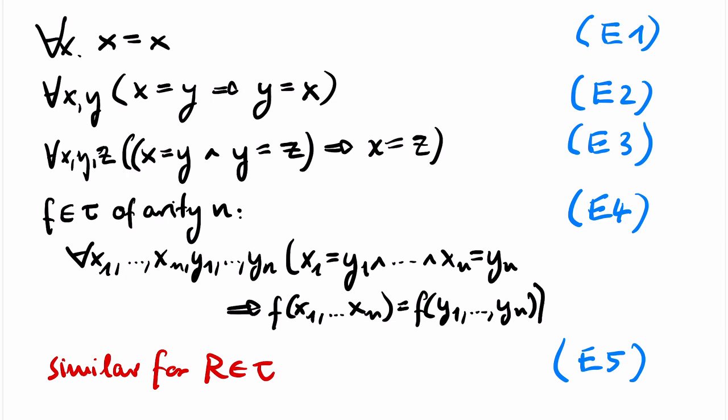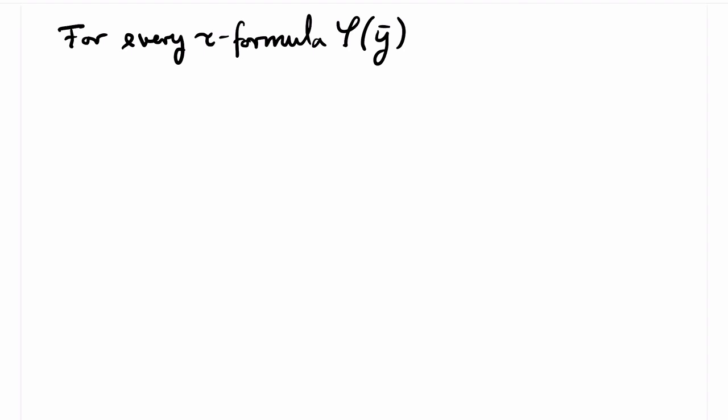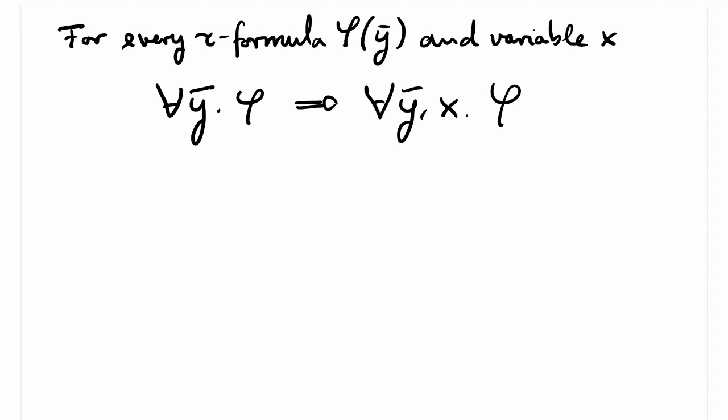It should be clear that all of these sentences hold in all τ-structures. The next axiom is actually not one axiom but infinitely many. For every first-order τ-formula φ with free variables y, and for every variable x, we have the axiom: ∀y φ → (∀y ∀x φ). This is called Q1. The Q indicates that it is an axiom about quantifiers. Clearly this sentence holds in all τ-structures — on the right we just added a dummy variable which has no effect on the truth value.